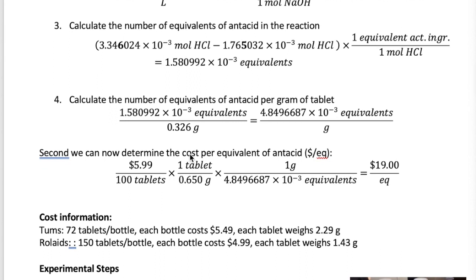Now, remember that what we want to know is how much active ingredient we have in a gram of antacid tablets. To do that, we will take the number of equivalents that we just calculated and divide that by the mass of antacid we used in the experiment, which is 0.326 grams. This gives us 4.85 times 10 to the minus 3 equivalent of the active ingredient per gram of antacid tablets.